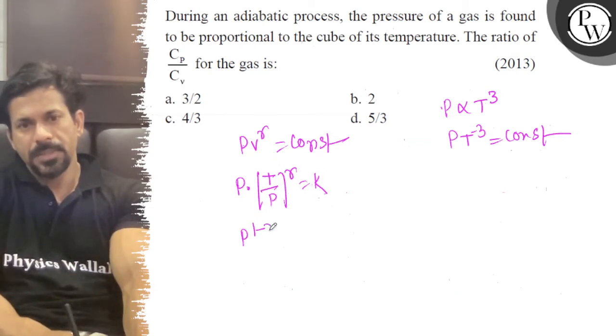So, P to the 1 minus gamma into T to the gamma. So, P T to the gamma upon gamma minus 1 equals constant.